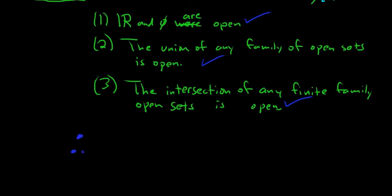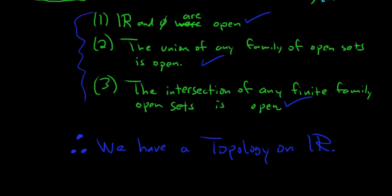So therefore, we have a topology on the set of real numbers. And our topology is defined by the way we define open sets. So when you're dealing with topology, you define what it means for a set to be open, and then if you satisfy these three conditions, then you have what's called a topology on your set. So I hope this video has been helpful. That's it.